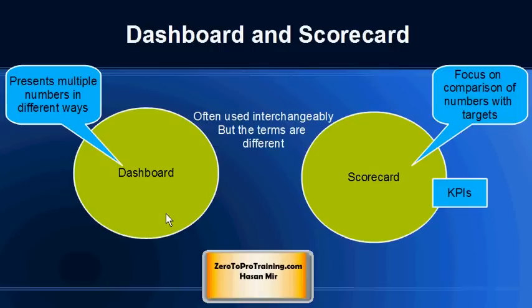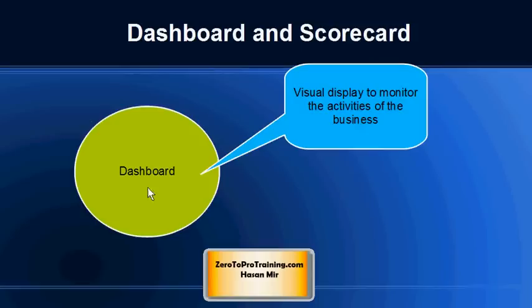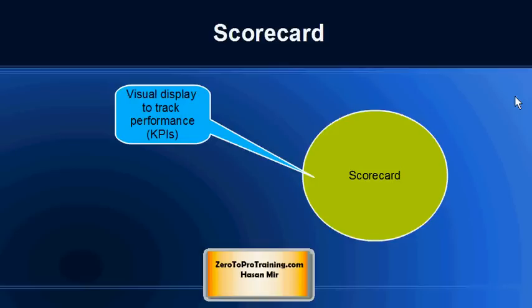A dashboard could display any information, whereas in scorecards you are going to see key performance indicators, called KPIs. A dashboard is a visual display to monitor activities of the business, and a scorecard is also a visual display but used to track performance by comparing the numbers with the targets, with the help of key performance indicators known as KPIs.